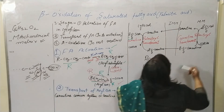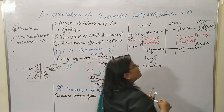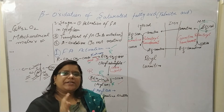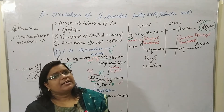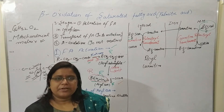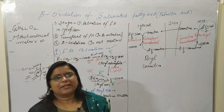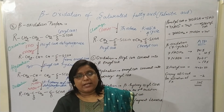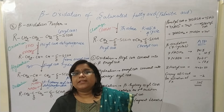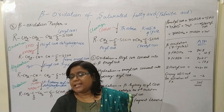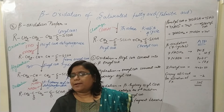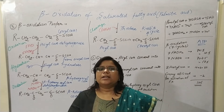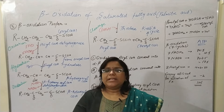The acyl coenzyme A has now reached into the mitochondrial matrix and is ready for further beta oxidation. When the acyl coenzyme A reaches the mitochondrial matrix, it will start and proceed through the beta oxidation pathway.